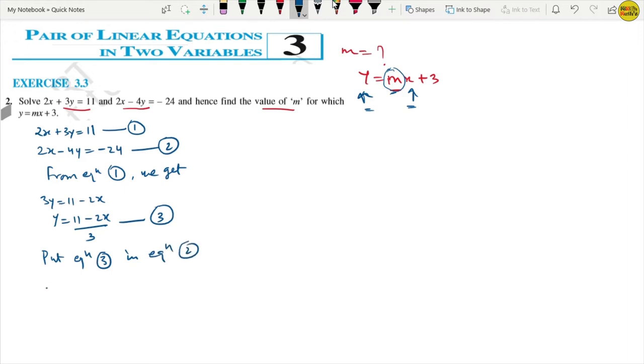What do we get? So we get 2x minus 4 times y. Y's value is 11 minus 2x upon 3. This equals to minus 24. Now we will solve this.